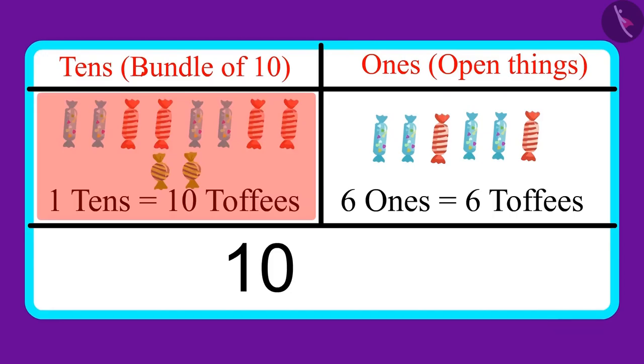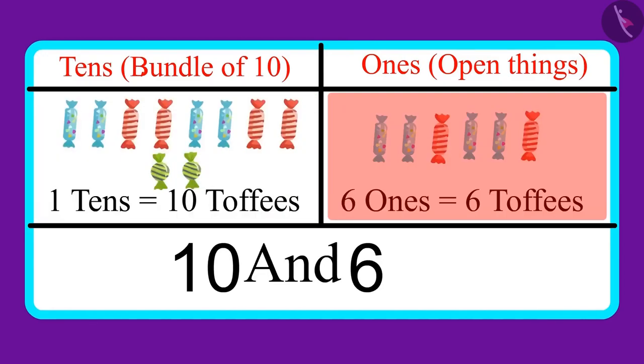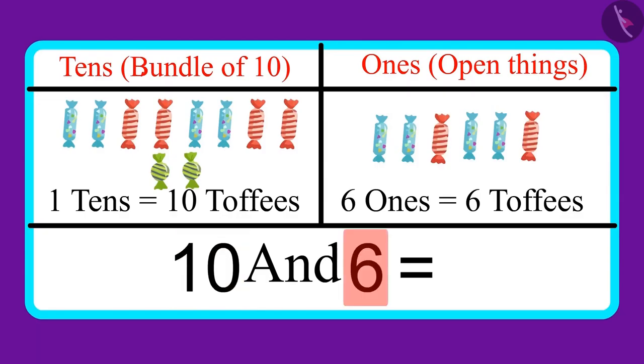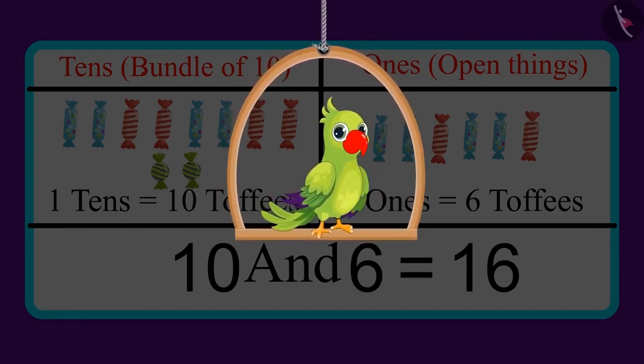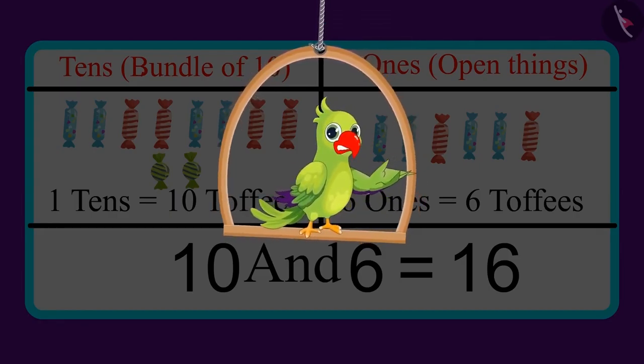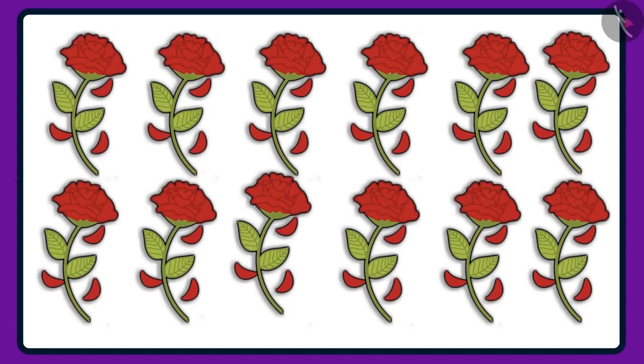One tens means ten toffees, and six ones means six toffees, which means these are sixteen toffees. Your answer was also the same, right? Very good! Come on, let's look at another similar example.